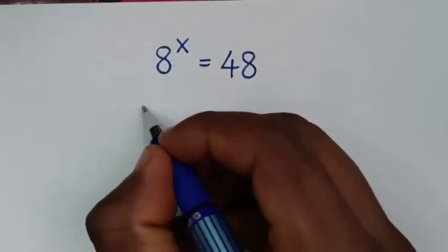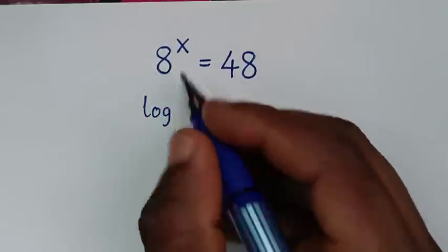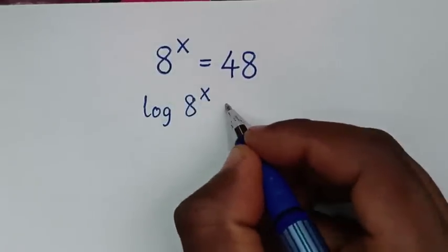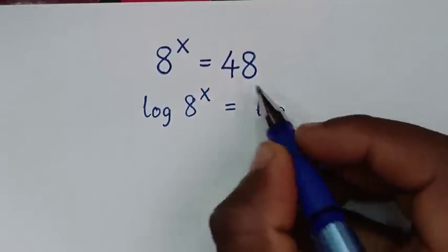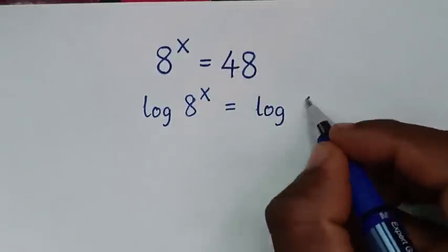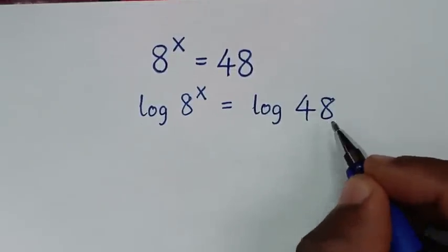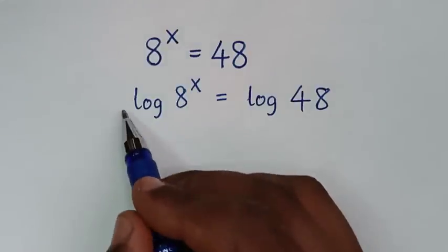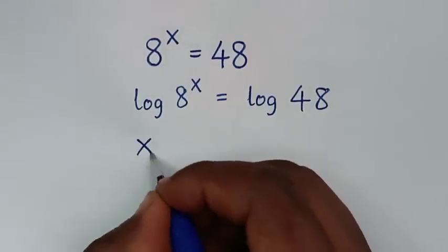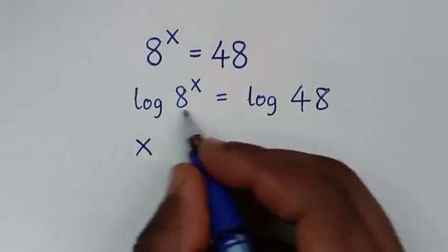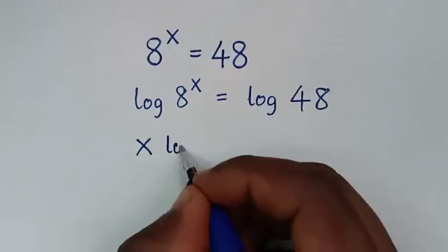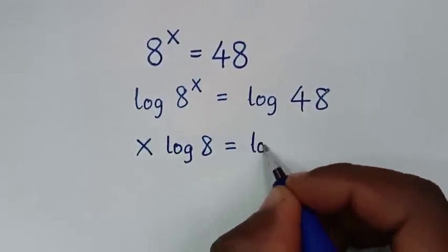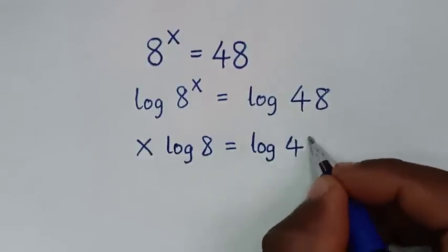So it will be log of 8 power x is equal to log of 48. Then this power x will move to the base, so it will be x times log of 8 is equal to log of 48.